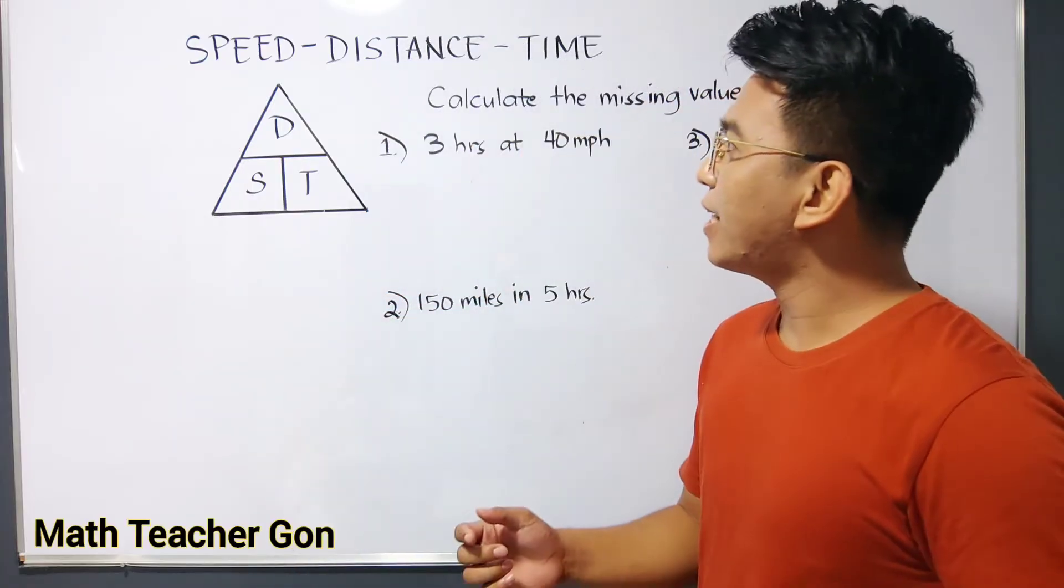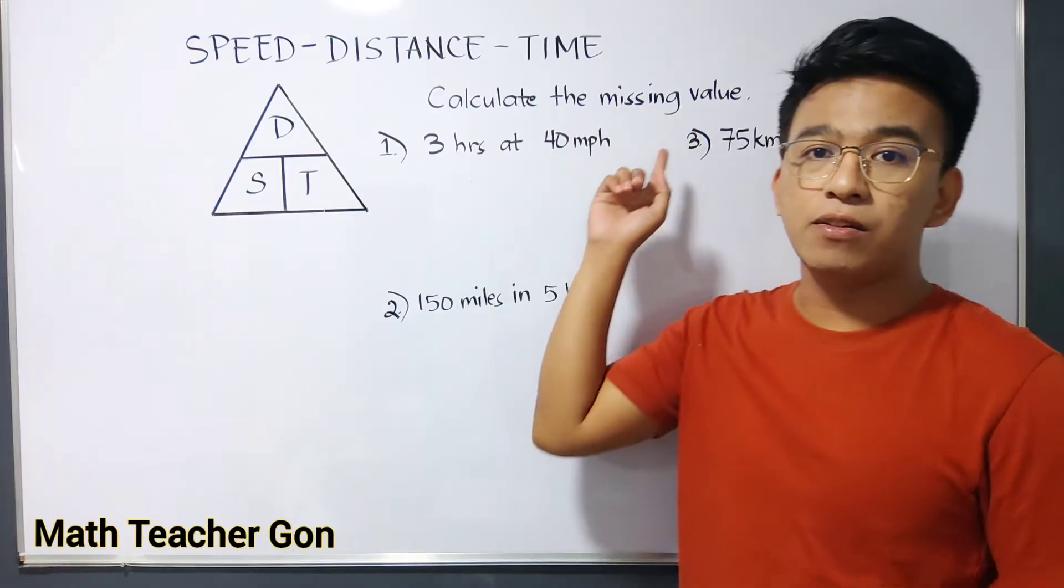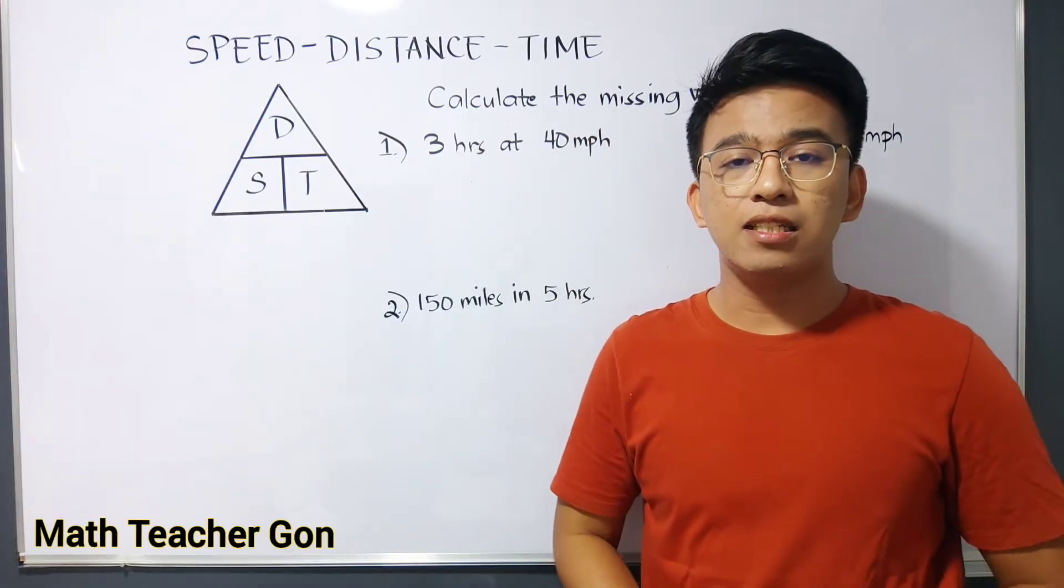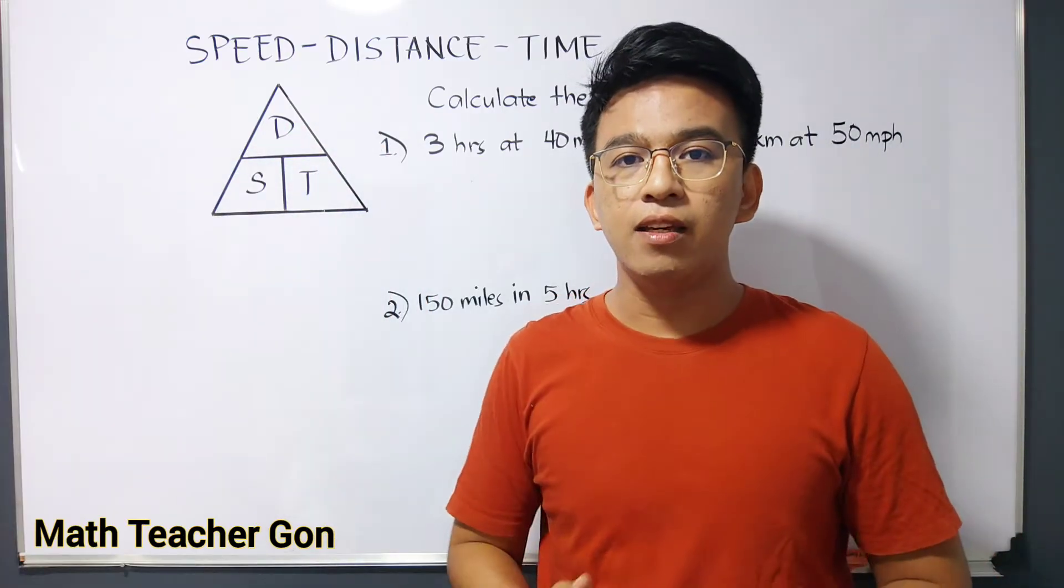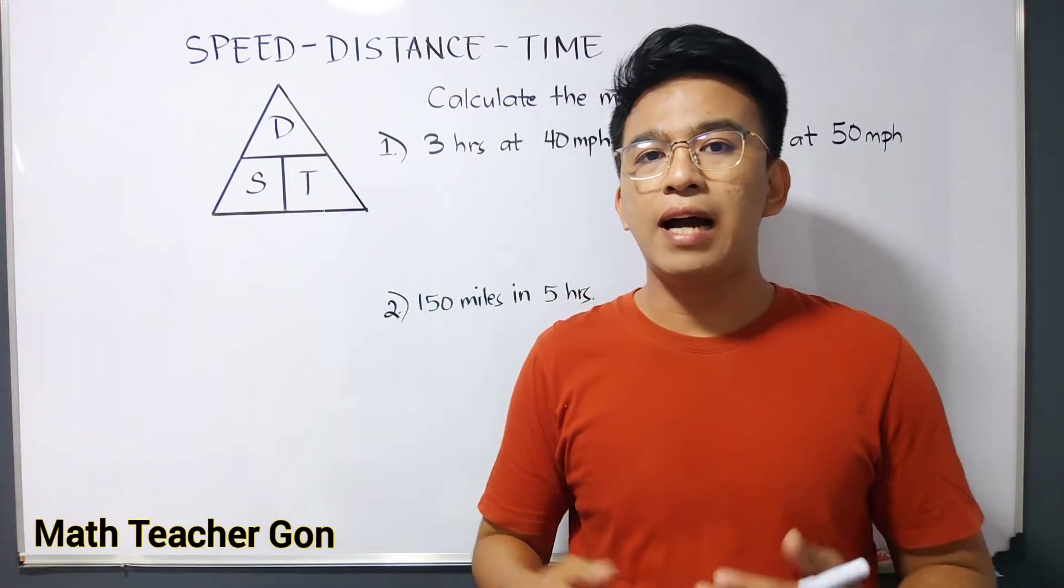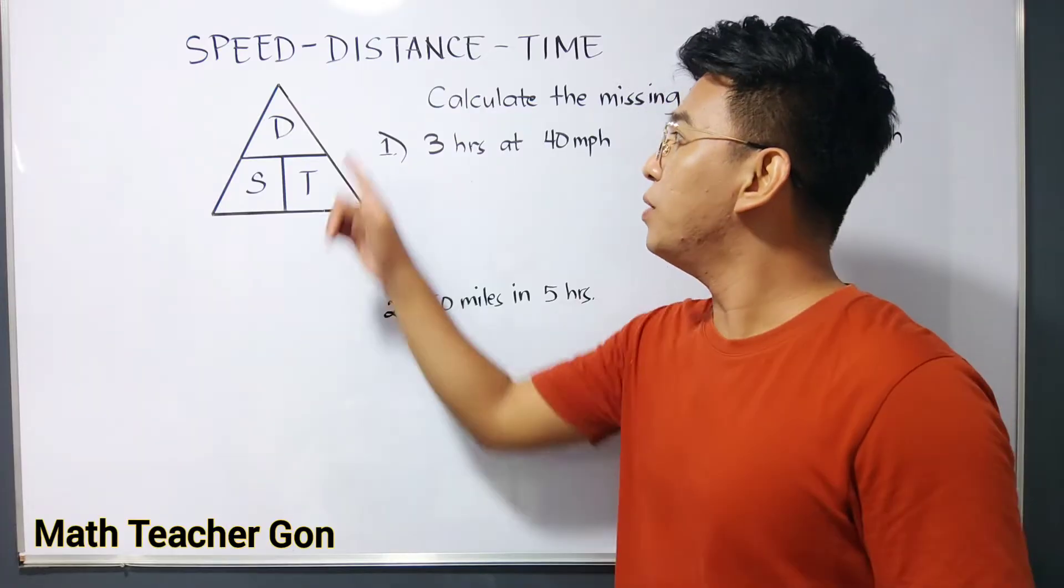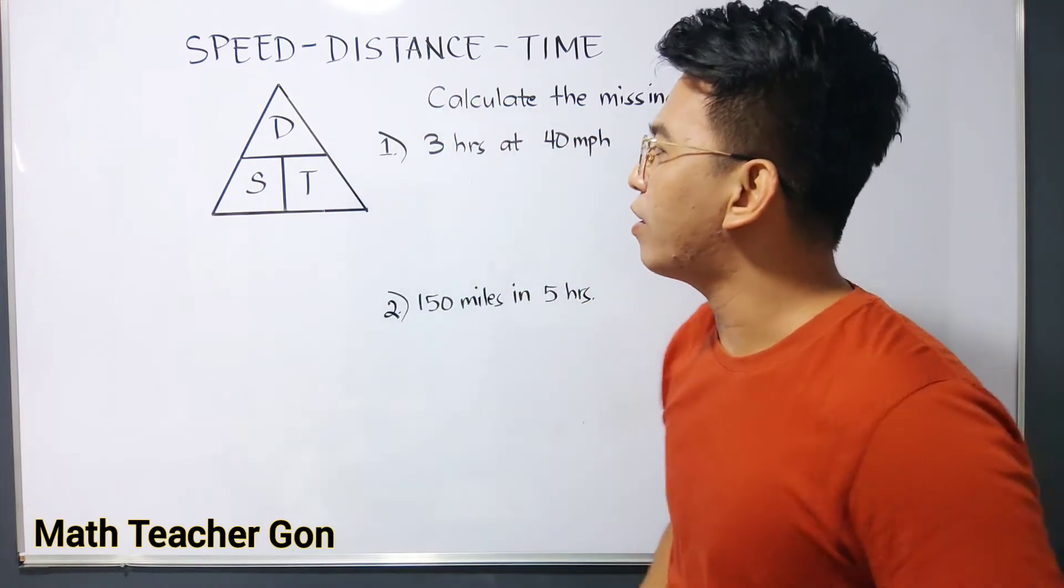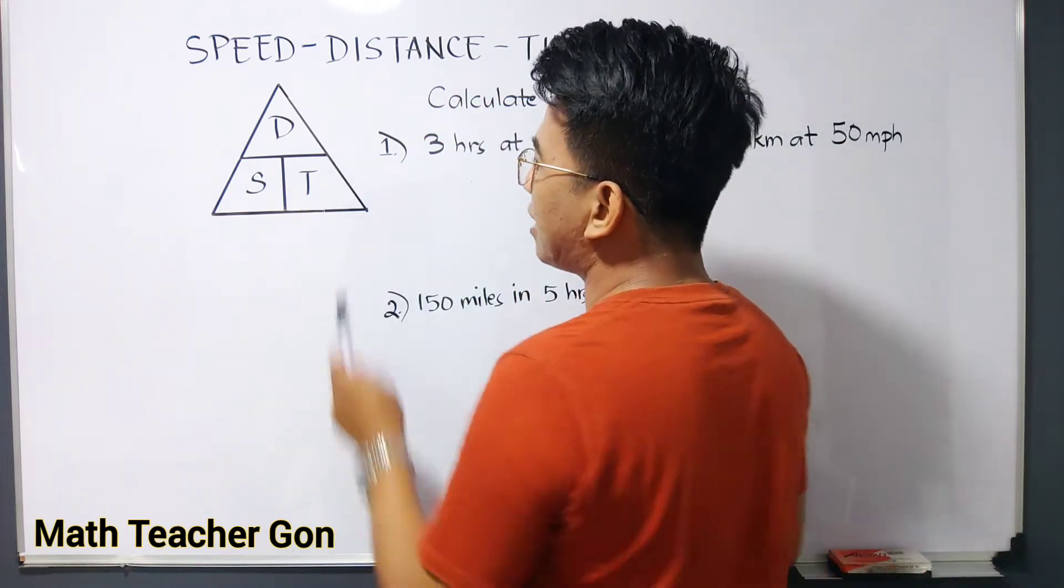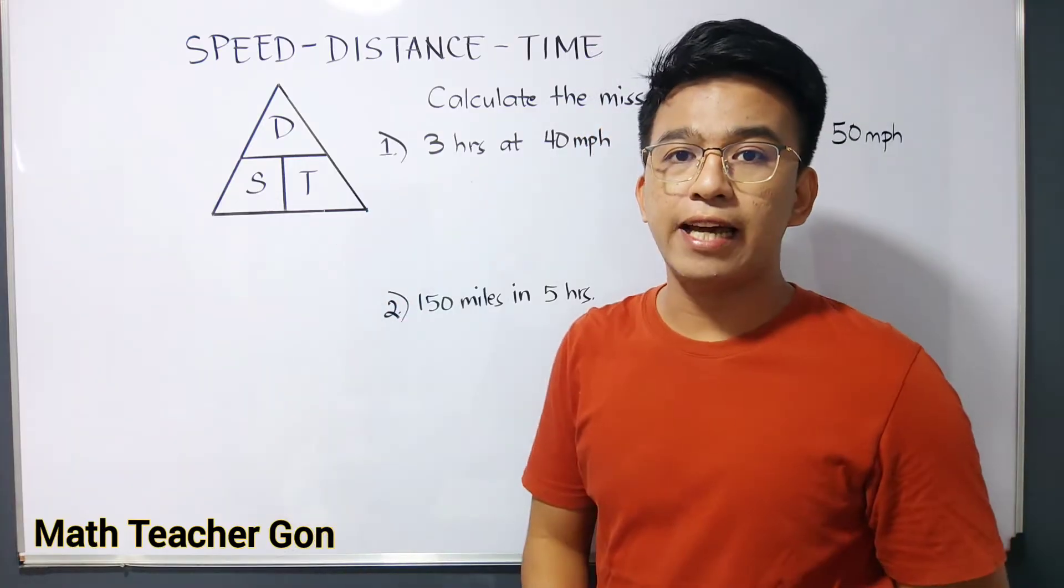So basically guys, before we calculate the missing value involving distance, speed, and time, we have here this triangle. First, you need to know how to derive or memorize the formula with regard to speed, distance, and time. So as you can see, we have here D stands for the distance, S for the speed, and T stands for the time.